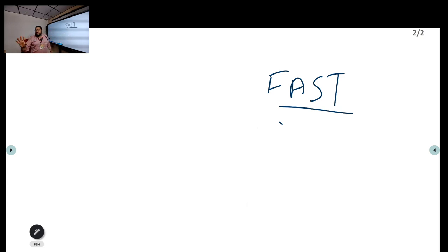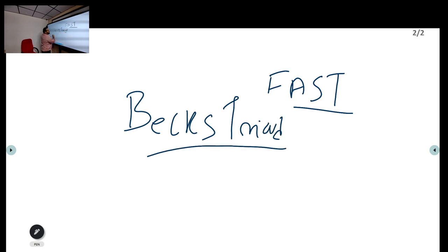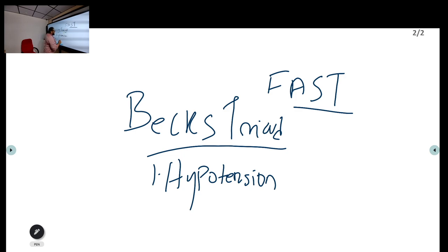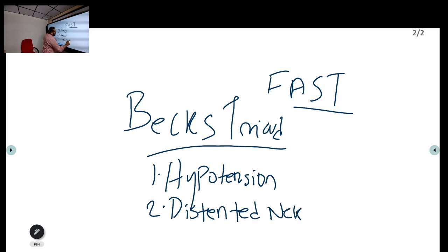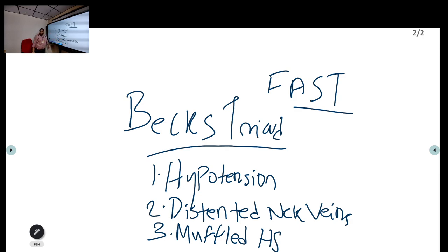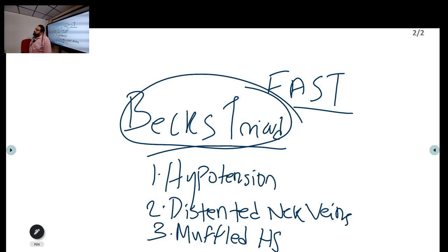Not all cardiac tamponade presents as cardiac arrest — it can present with hypotension first. If unrecognized, it will progress to cardiac arrest. The classic signs to recognize before arrest are Beck's triad: hypotension, distended neck veins, and muffled heart sounds on auscultation. When a patient with suspected pericardial effusion shows all three components of Beck's triad, diagnose cardiac tamponade.